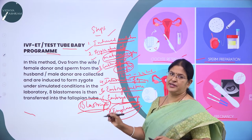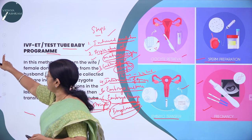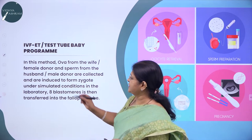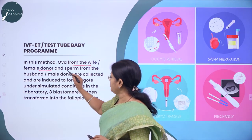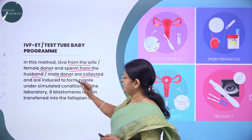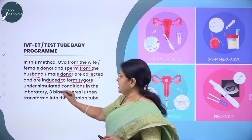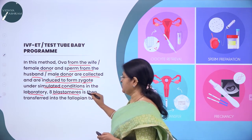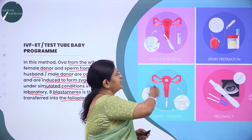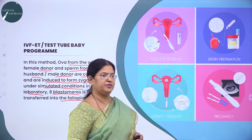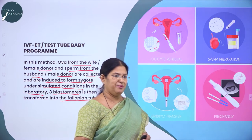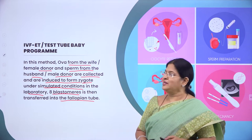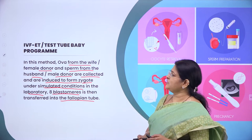These are the important techniques for IVF-ET or the test tube baby program. In this method, ova from the wife or female donor and sperm from the husband or male donor are collected and induced to form a zygote under simulated laboratory conditions. They are allowed to develop up to the 8-blastomere stage, then transferred into the fallopian tube.